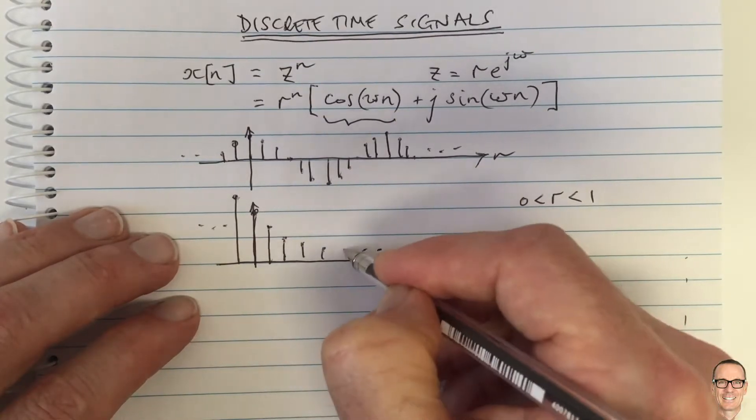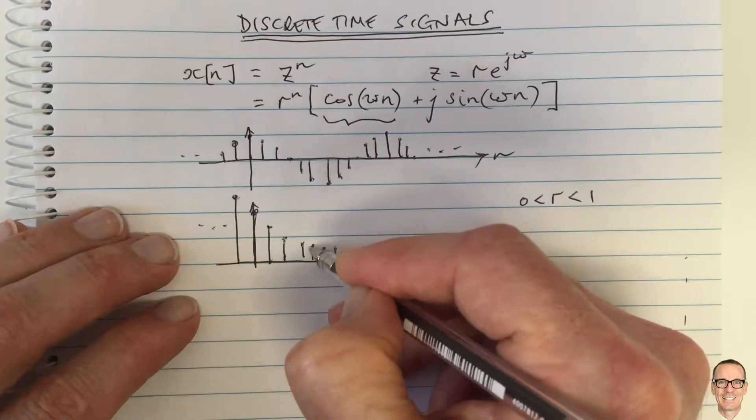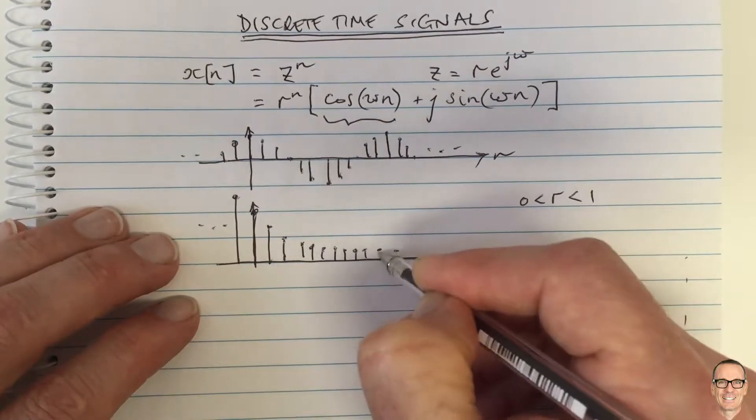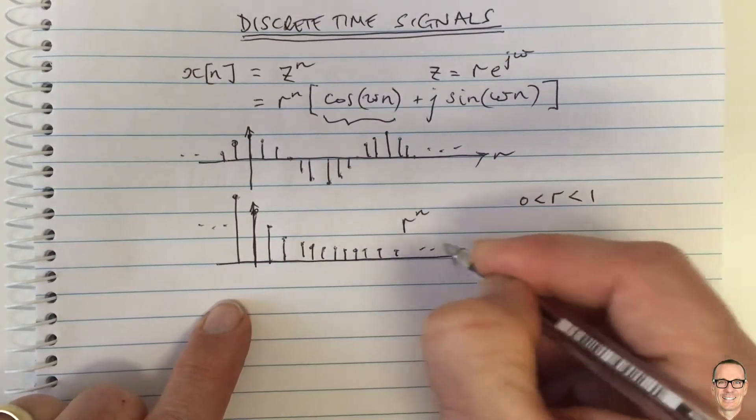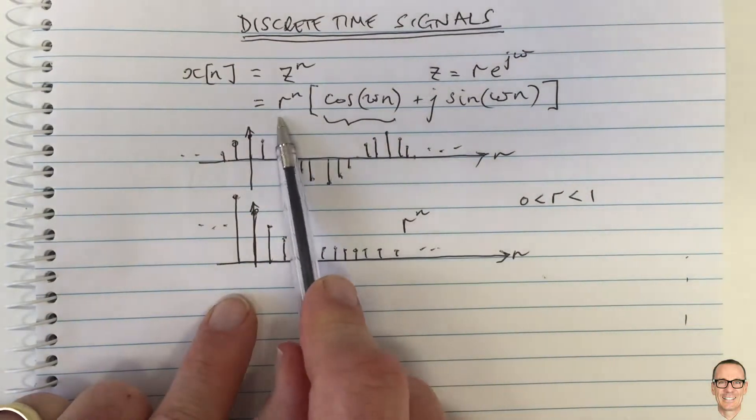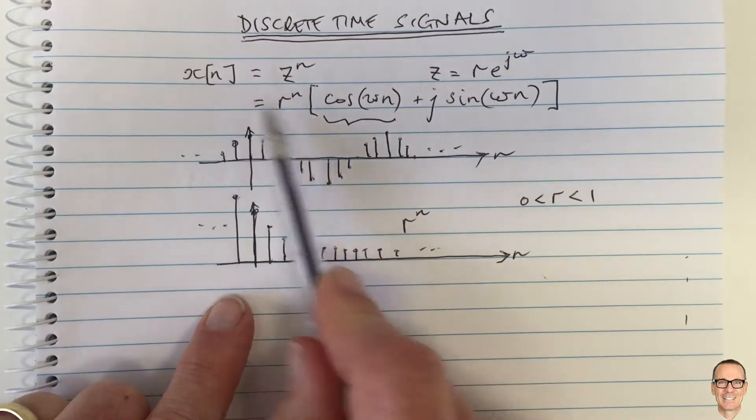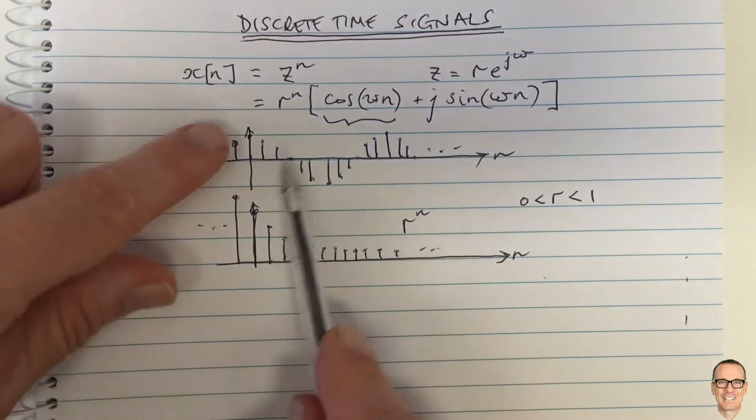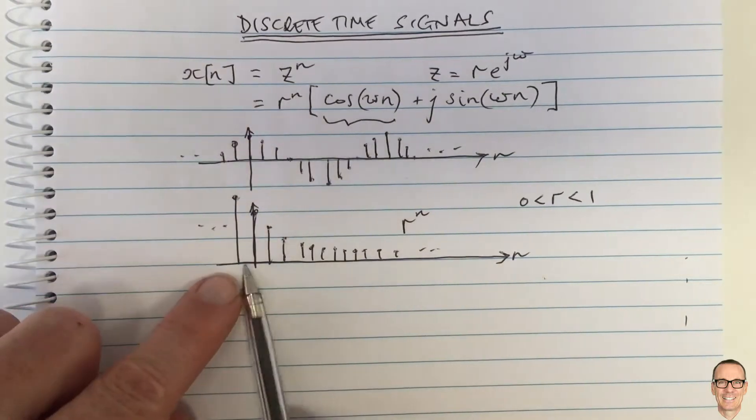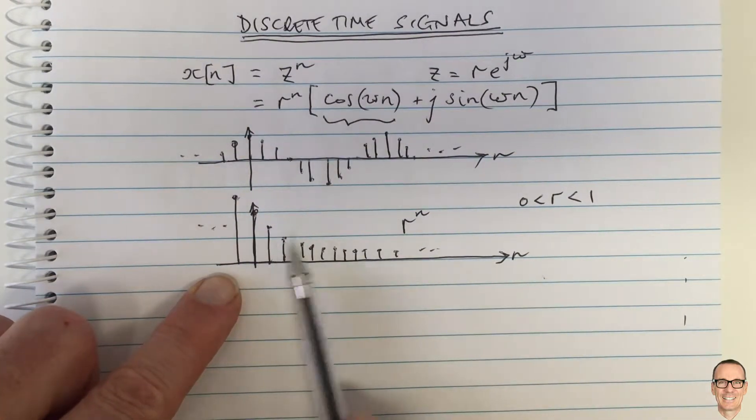Of course, negative values as well. So this is the r^n function. When we look at our function we wrote at the start, we've got r^n times the cos, so we're multiplying these two functions at every value of n.